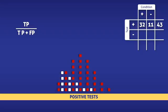Now all that's left to do is enter the data into the equation. In doing so, we find that the positive predictive value is 32 over 43, which is 74%.